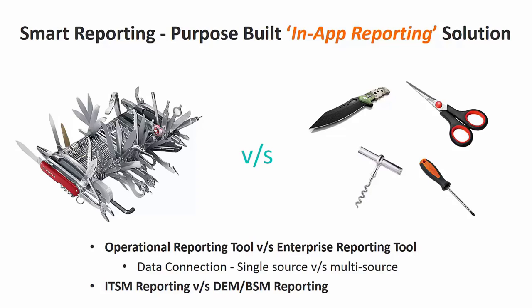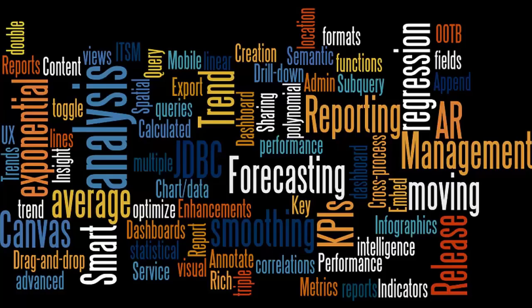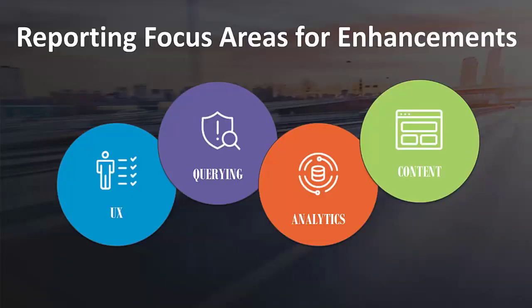Smart reporting has four focus areas for improvement: UX, query capabilities, analytical power, and persona-driven content. UX was a key design principle from the beginning — all UX principles, whether for digital workplace or Smart IT, are designed around mobile-ready interactions. Smart reporting is no exception and offers a mobile app on Google Play Store and Apple App Store, making all smart reporting content available on mobile devices.